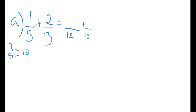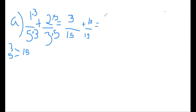Let's convert one-fifth to what over 15. Five times three equals 15, so whatever I do to the denominator, I do to the numerator: multiply one times three, giving me three over 15. For the second fraction, three times five gives me 15, so I multiply the numerator by five: two times five becomes 10. So my numerator would be three plus 10 over 15, which equals 13 over 15 — final answer.